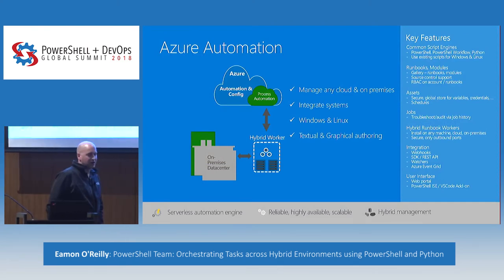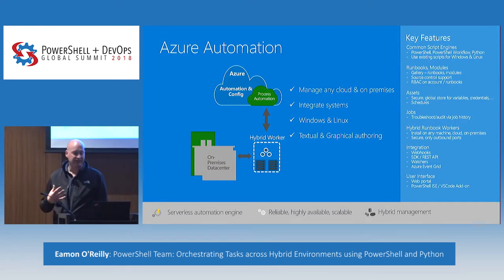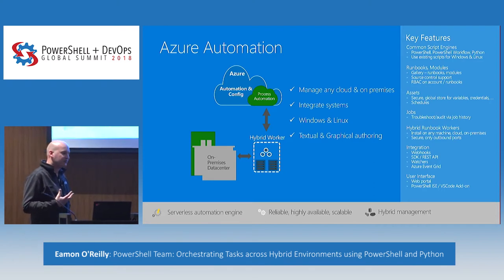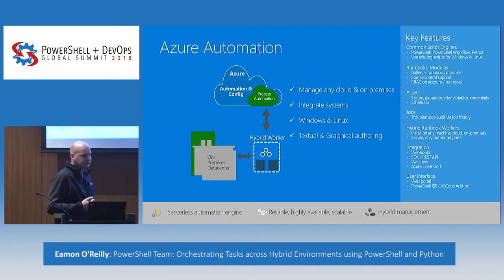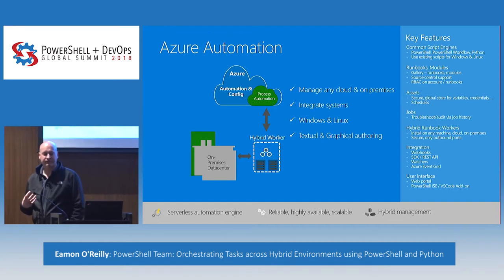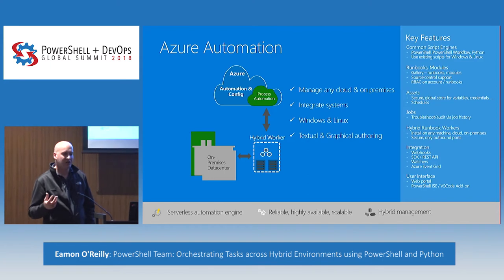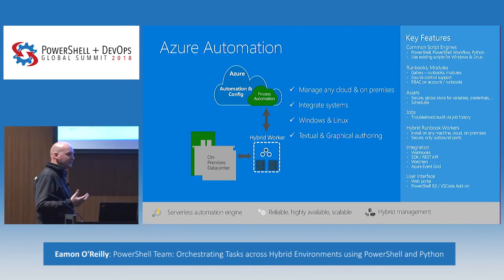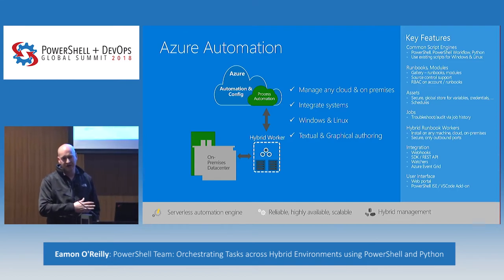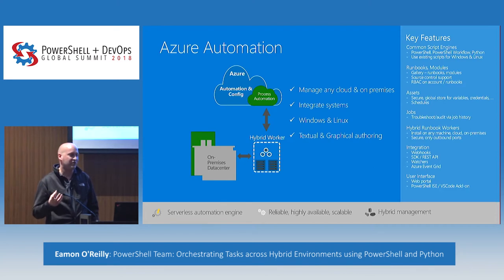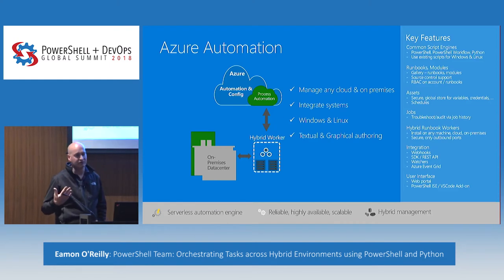Azure Automation Service is basically a serverless automation engine that runs in the cloud. You don't have to focus on how the infrastructure is going to work — do I need to spin up enough VMs? Is it going to scale? Is it reliable? What happens if my machine is down? We try to take all of that pain away and just say: all you need to do is focus on what automation you're trying to deliver, and from the back end we will run that behind the scenes and manage all the infrastructure to have it scale.